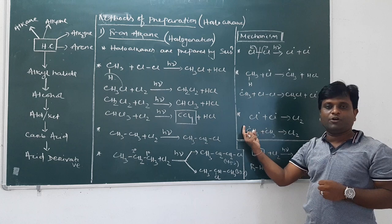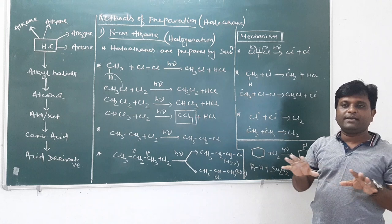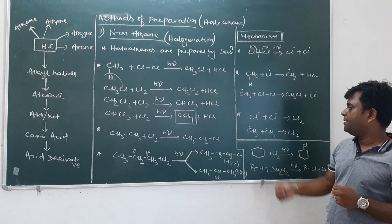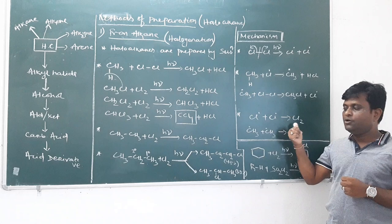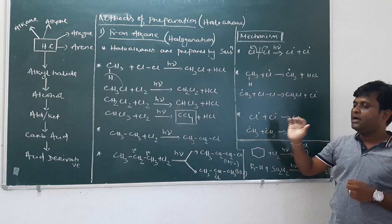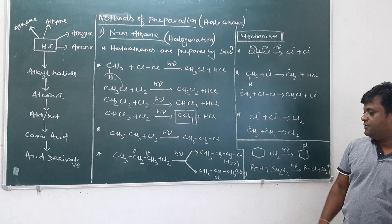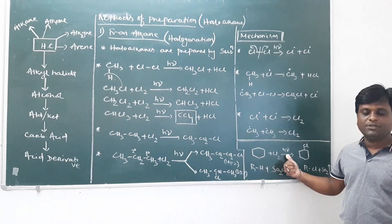The last step is termination. In the termination step, the free radicals from propagation steps combine. When two chlorine free radicals combine, they form Cl2. When two methyl free radicals combine, they form ethane C2H6.